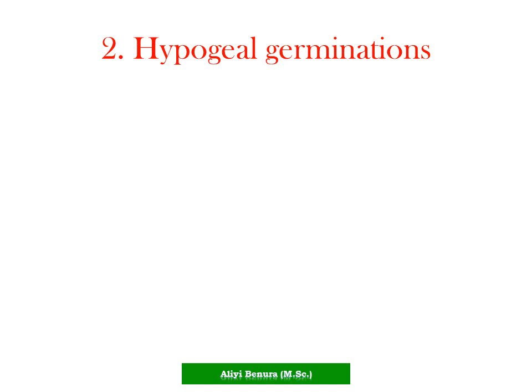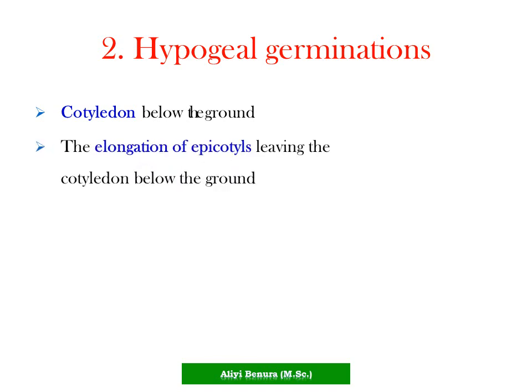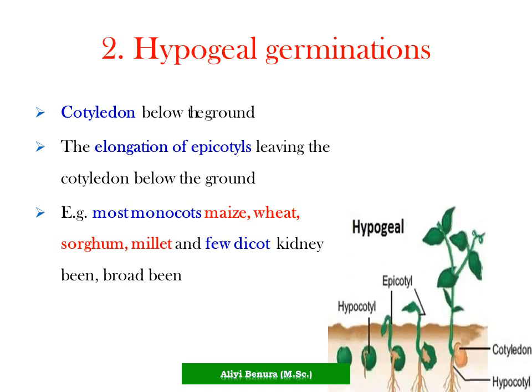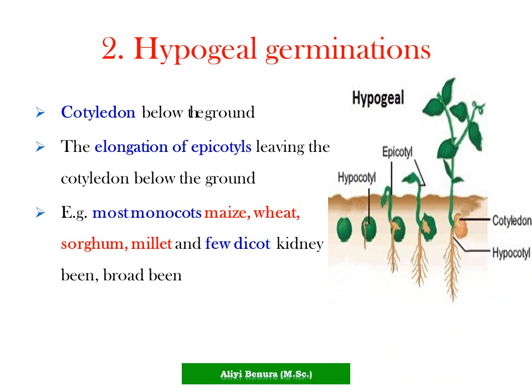The second type is hypogeal germination, where the cotyledon is below the ground. The elongation of the epicotyl leaves the cotyledons below the ground. Most monocots - maize, wheat, sorghum, millet - and a few dicots like kidney bean and broad bean are examples of hypogeal germination. The first leaf grows above ground while the cotyledons remain underground.